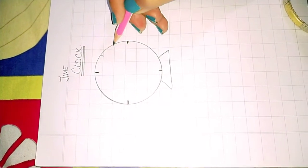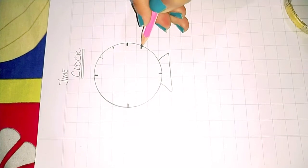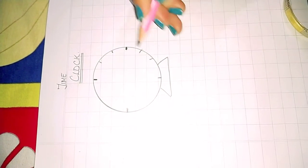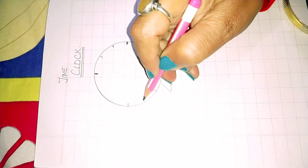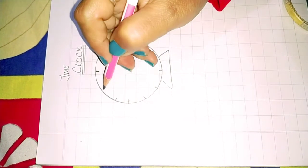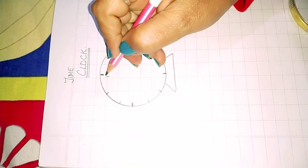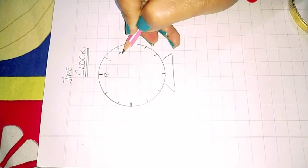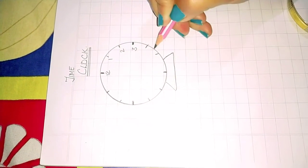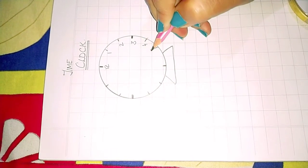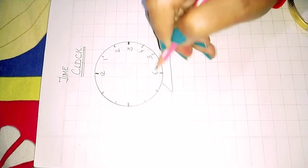Now in between you have to make 2 lines. Only 2 lines between. Now you write the numbers: 12, 1, 2, 3, 4, 5, 6.